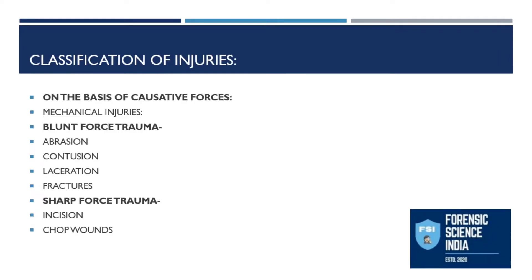Now we come to the classification of injuries. Injuries can be classified firstly on the basis of their causative force. Mechanical injuries can be of two types: blunt force trauma or sharp force trauma. A blunt force trauma is inflicted by any object with a blunt edge — no sharpened edge — and can manifest as abrasion, contusion, or laceration.